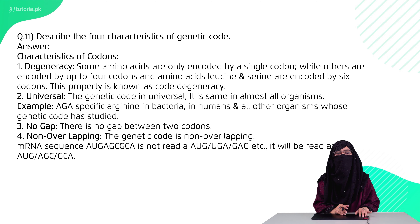Question 11 is: describe the four characteristics of the genetic code. The genetic code is degenerate and universal, there is no gap, and there is no overlapping.